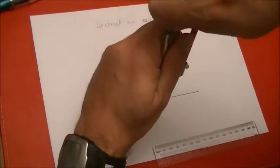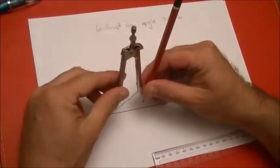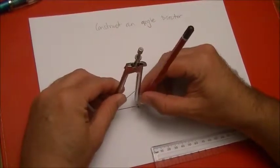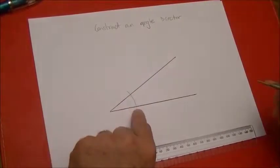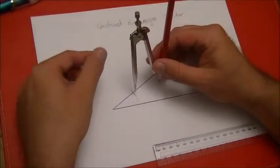I'm going to park myself in the corner of the angle and I'm going to draw myself an arc here, out there. And then what I'm going to do is go to that intersection point.